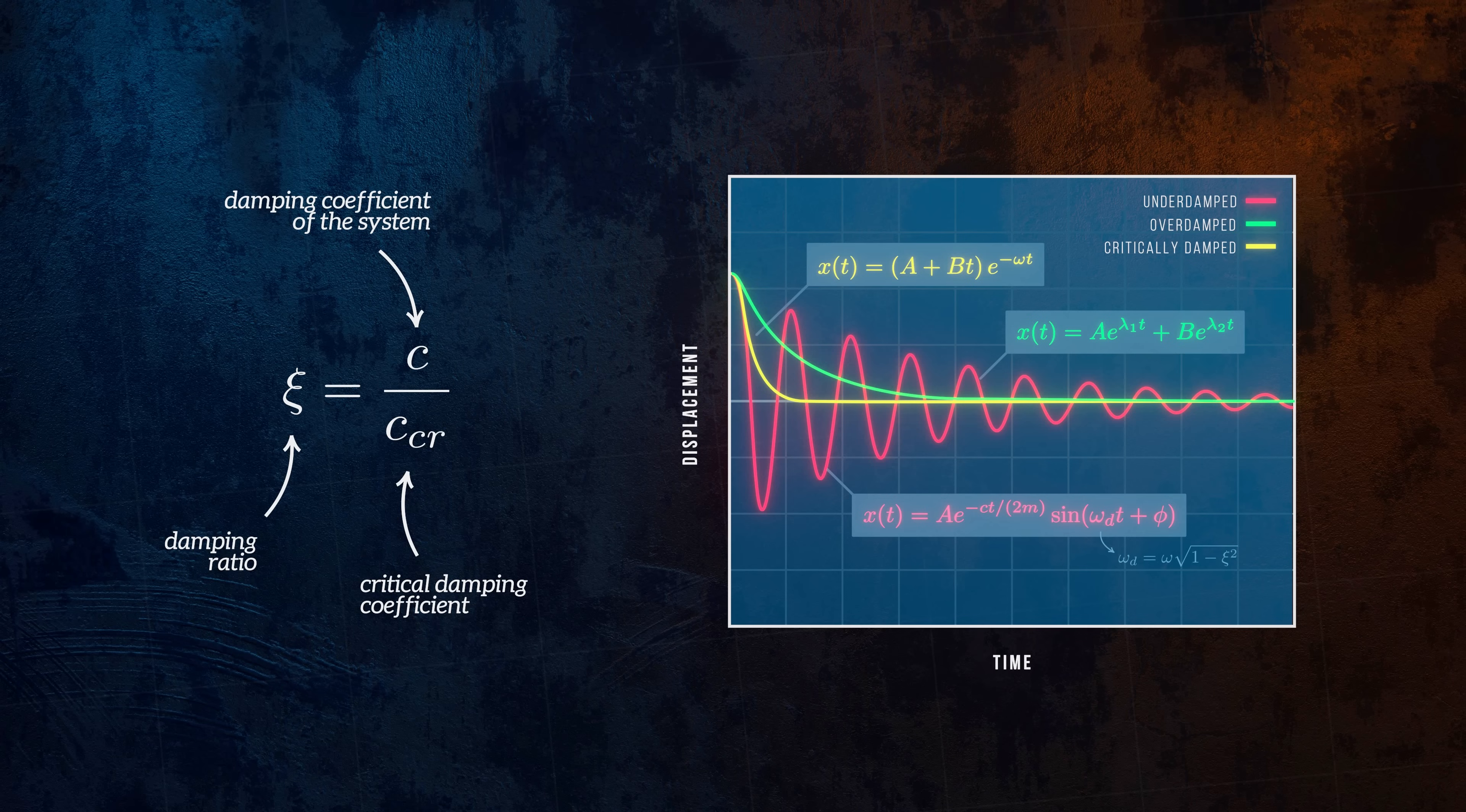Most engineering systems and structures have a damping ratio of less than 1, so they're underdamped.